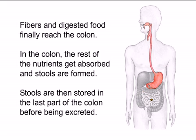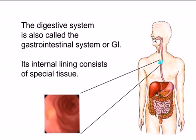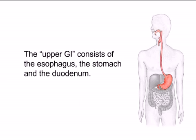Fibers and digested food finally reach the colon, where the rest of the nutrients get absorbed and stools are formed. Stools are then stored in the last part of the colon before being excreted. The digestive system is also called the gastrointestinal system or GI. Its internal lining consists of special tissue. The upper GI consists of the esophagus, the stomach, and the duodenum.